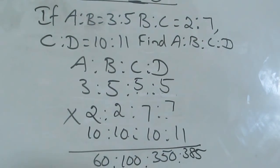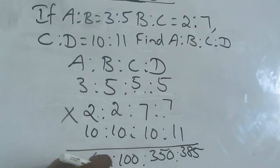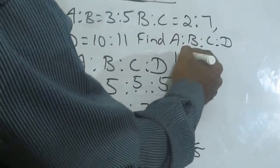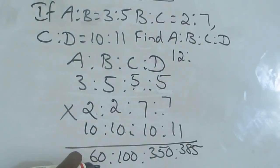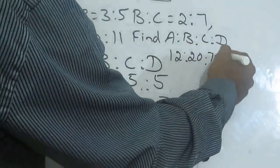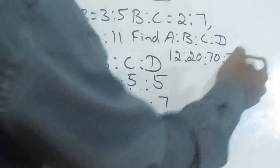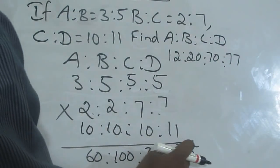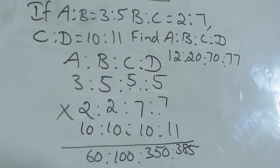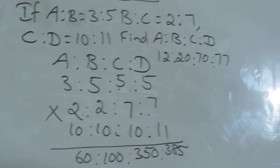But this is not the answer. Why? Because we know that ratio should be expressed in the lowest form. Now all the terms are divisible by 5. Divide by 5: 60 divided by 5 is 12, 100 divided by 5 is 20, 350 divided by 5 is 70, and 385 divided by 5 is 77. So A is to B is to C is to D is 12 is to 20 is to 70 is to 77. We cannot simplify further because 77 is 7 into 11 and the other numbers are not divisible by those. Okay.